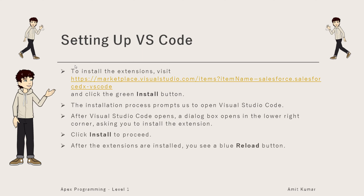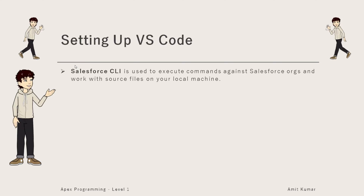Click Install to proceed. After the extensions are installed, you see a blue Reload button. By clicking on it, you can reload Visual Studio Code to finish the installation.